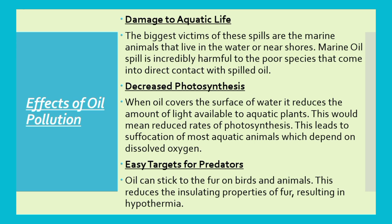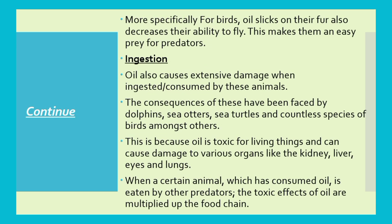Birds and animals can become covered in oil, which disturbs their insulating properties, so temperature is not maintained, leading to hypothermia. Birds exposed to heavy oil spillage find it difficult to fly and become easy targets for predators. Some organisms may consume oil, and its toxic properties damage vital organs such as the liver, eyes, and lungs — especially in dolphins, sea otters, and sea turtles.